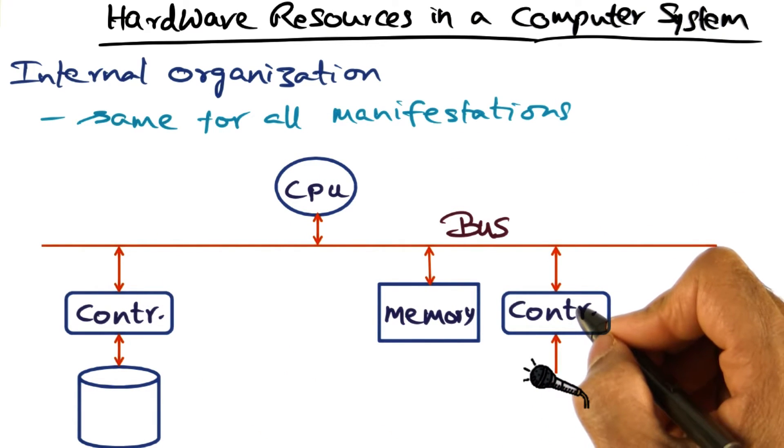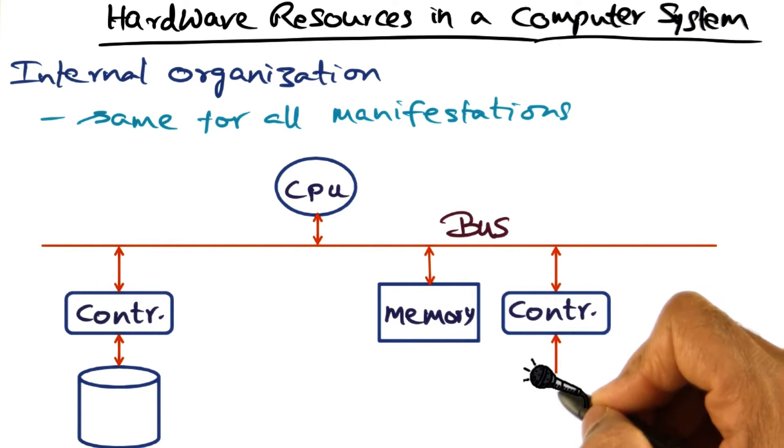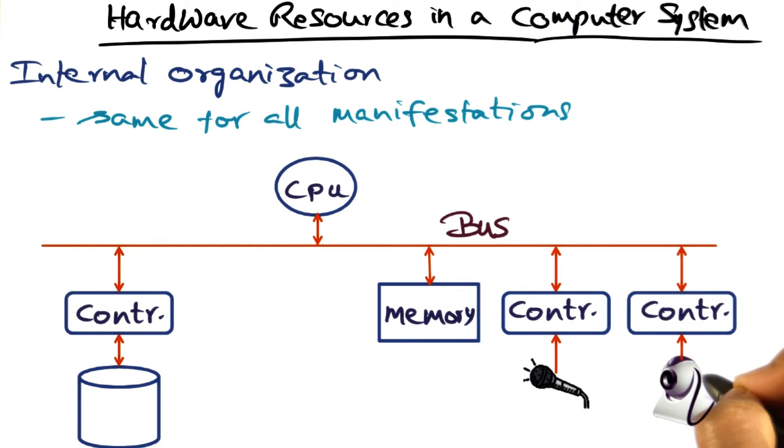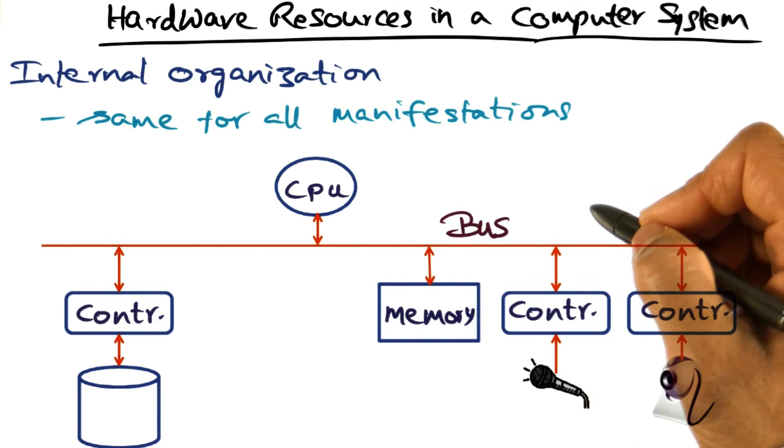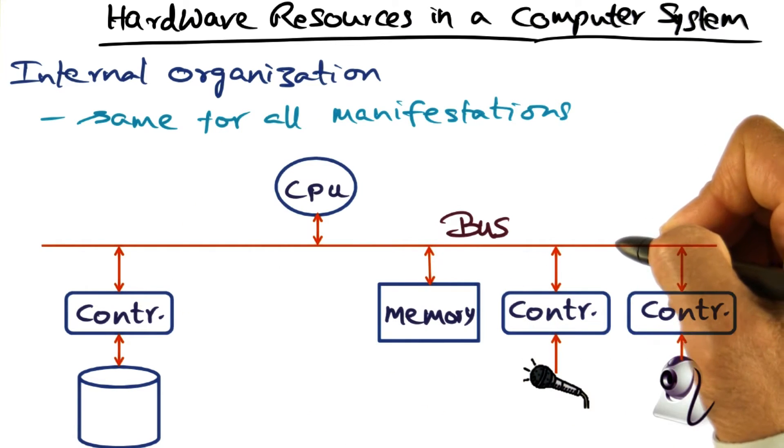You may have other peripheral devices, like a microphone or a camera. All of these devices, of course, are accessible for the CPU through this conduit, which is the bus.